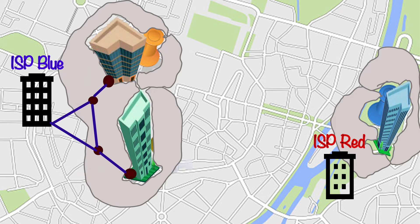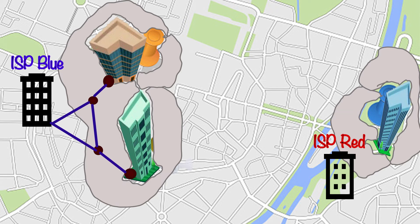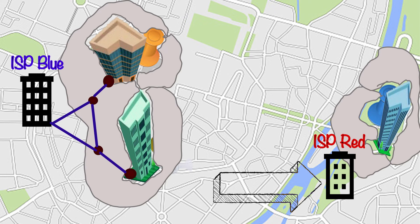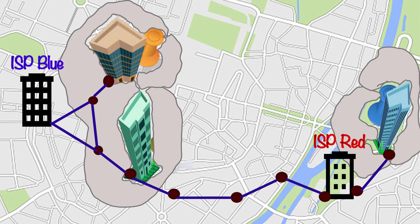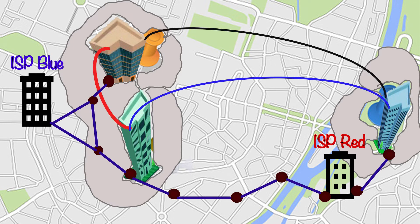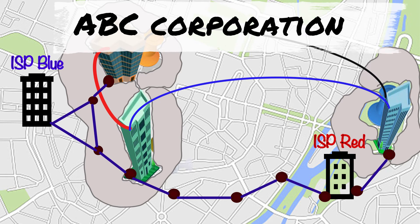But what if the company has one branch office where the local service provider does not have fiber connectivity available? In that case, the ISP can reach out to another ISP where they have their own facility available. These two ISPs come together, sign a contract, and provide end-to-end connectivity for that particular customer — in our example, ABC Corporation.